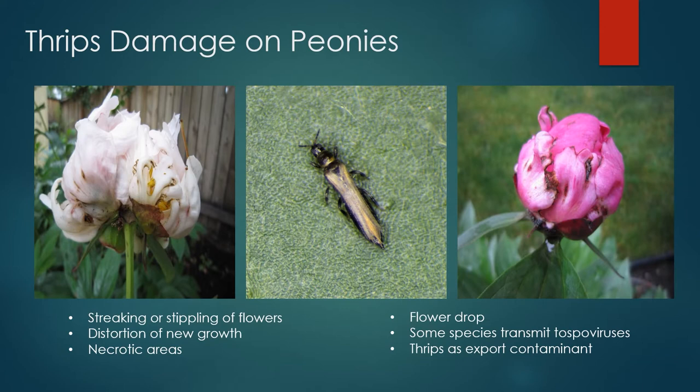Thrips can cause damage to peonies in many ways. Both the acts of laying eggs and feeding require that thrips pierce into plant tissue, thereby triggering several abnormal reactions by the peony itself. Streaking or spotting can be observed around areas where thrips have been feeding, as well as distortion of new plant growth. As feeding and egg laying may subject peony tissue to outside pathogens, necrotic areas may develop due to the presence of these secondary invaders. Heavy feeding damage by thrips before a peony bud opens can result in buds failing to open or in flower drop.